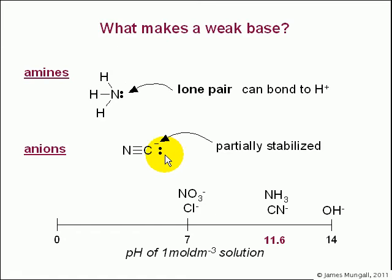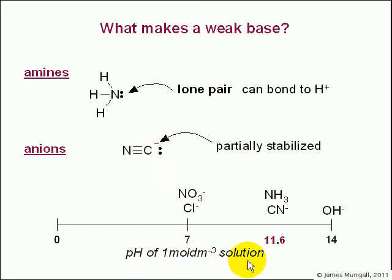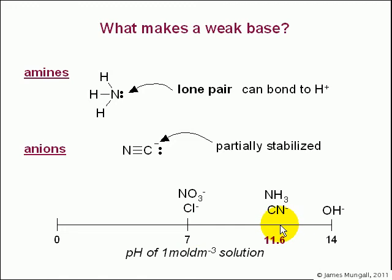Another example would be an anion which is partially stabilised. If we think of CN minus, that lone pair is partially stabilised on that ion. If we think of this in terms of the pH scale for 1 molar solutions: a strong base has OH minus ions; neutral anions found in weak acids like nitrate and chloride are neutral; whereas weak bases like NH3 as an amine, or CN minus, will have a pH somewhere between 7 and 14.